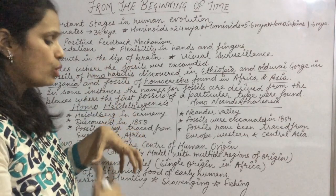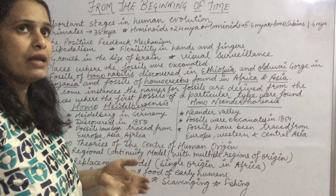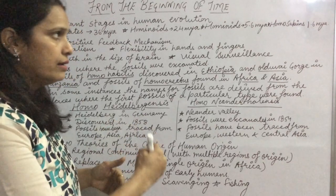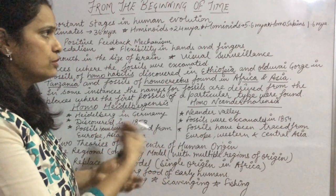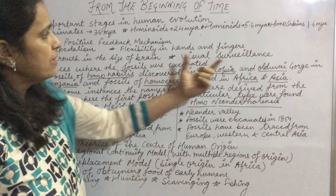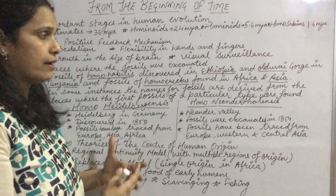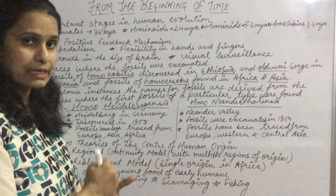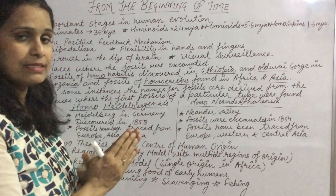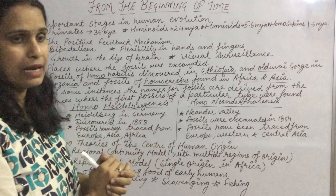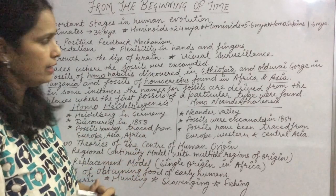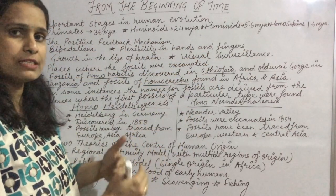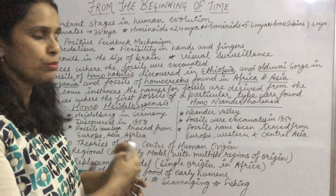Additionally, they were able to carry their infants in a better way than before. Also, visual surveillance — they were able to cover long distances more easily, which helped them in hunting and many other activities. So, positive feedback mechanism refers to features that developed in the human body and helped them become modern human beings — bipedalism, tool-making through hand flexibility, and so on.